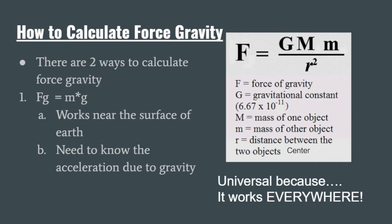This is very important because a lot of people mess this up. The key word here is center. It's not really a big issue when we're talking about smaller objects, but if we're talking about the Earth and the moon, the surface of the Earth is very far away from the center of the Earth. Same with the moon. That distance from center to surface is huge, so it plays a big impact in calculating force of gravity. So we need to remember to calculate the distance from the centers of those objects.